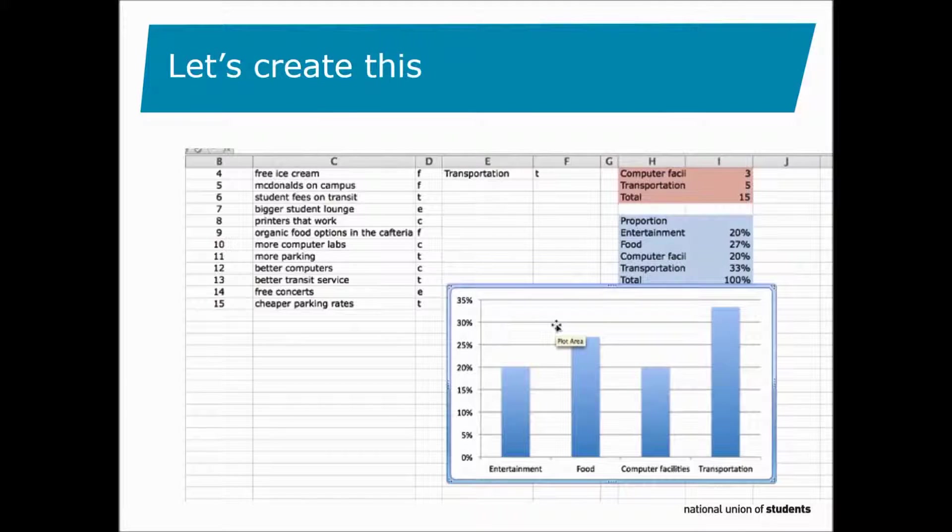So we're going to create a simple bar chart showing the number of times each theme was mentioned by students. These comments are extracts from an internal survey done by a student's union asking what one thing they would change about their institution. We're going to code the comments by theme, count the number and proportion of comments in each theme and create a bar chart to visualize it.